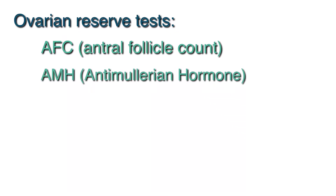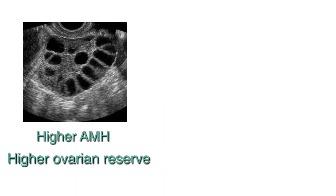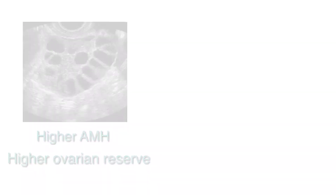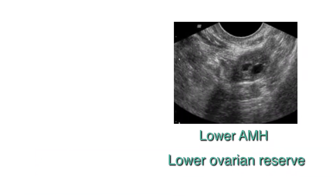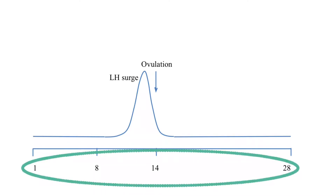The next test we'll talk about is AMH. AMH stands for anti-Müllerian hormone, and it is made by the cells that line the smallest follicles within the ovary. The more the follicles, the higher the AMH, and the better the ovarian reserve. Similarly, the lower the follicle number, the lower the AMH, and the lower the ovarian reserve. It is often the most convenient test for ovarian reserve just because it is not cycle day dependent, and it can be checked at any point in the cycle.